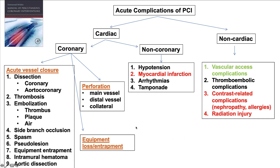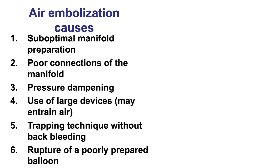Air embolization is one of the potential causes of acute vessel closure, or it can cause slow flow. There are two main mechanisms: one is entrainment of air into the manifold and the lines, and the other is rupture of a poorly prepared balloon in which there has been failure of completely removing the air.